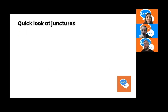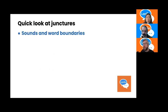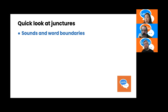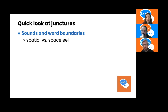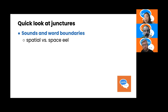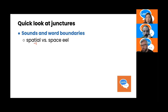In English we have what we call juncture phenomena: things tend to change a little bit differently between words than within words, but we can create sequences of words that look like a single word. Our first example is 'spatial' — as in spatial awareness — versus 'space eel,' an eel which is in space. When the sounds touch inside the word 'spatial,' the T or S sound becomes a 'shh' sound. But 'space eel' does not undergo this change even though the same sounds are involved.